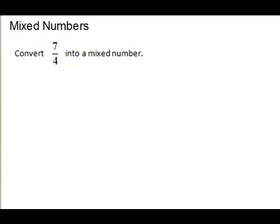Next we'll remember how to convert an improper fraction into a mixed number. We're going to change 7 fourths into a mixed number. You're going to use long division — divide the denominator into the numerator. So we're going to do 4 into 7. It will go one time. Multiply back, subtract, and your remainder goes back over your divisor as a fraction. So 7 fourths is equal to 1 and 3 fourths.